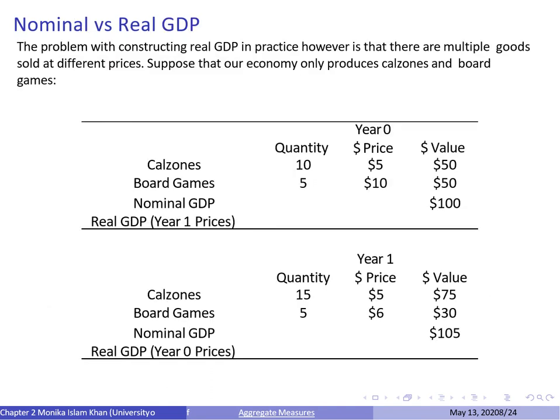It was easy to calculate real GDP for the calzone economy. However, in reality there is more than one final good, so real GDP must be defined as a weighted average of the output of all final goods. This raises the question of what the weights should be. We could use relative prices, but that raises the further question of what if relative prices change over time. Because of these issues, economists have developed a measure called real GDP in chained dollars.